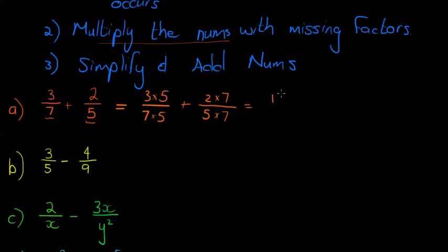We've got 3 times 5 is 15 over 35 plus 14 over 35, that equals 29 over 35. 29 is prime, so if 29 can't divide into the other one, then that is the simplest form we can have.